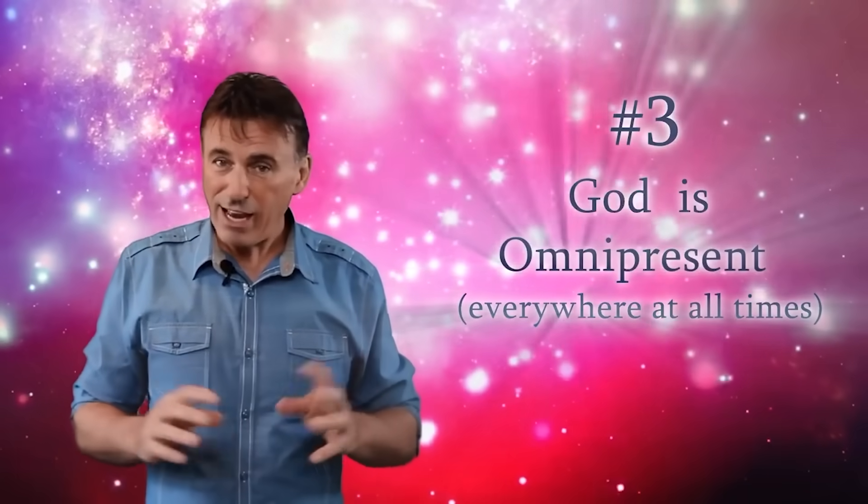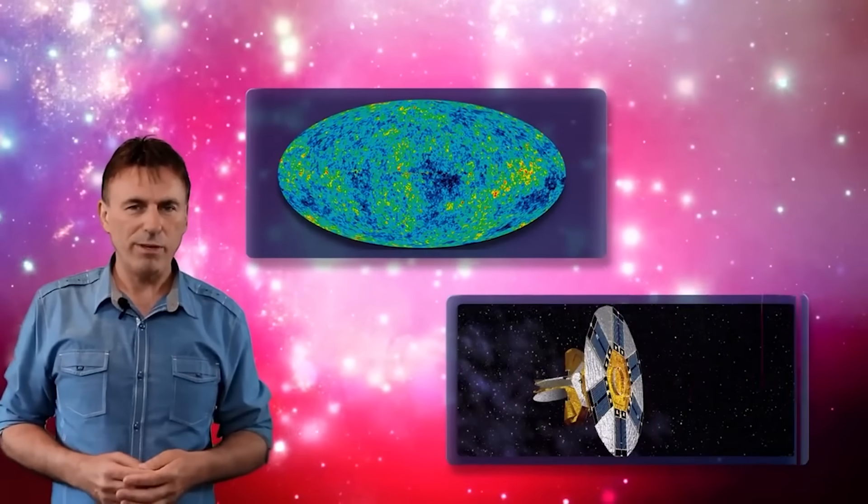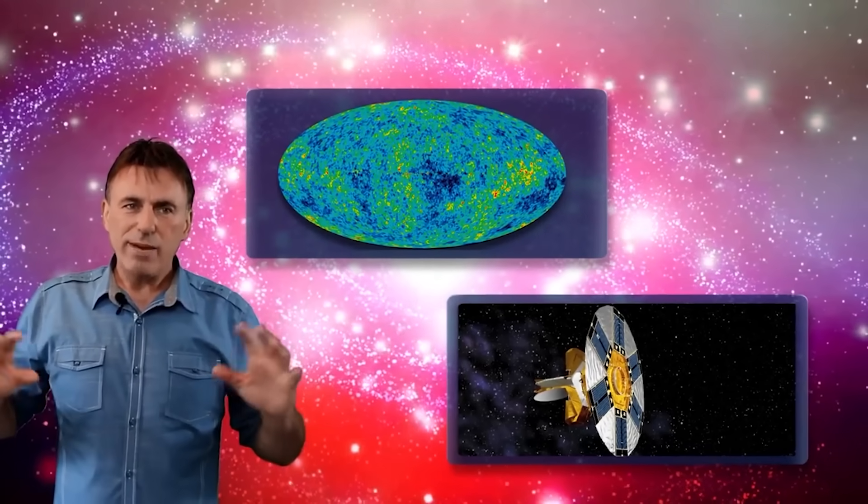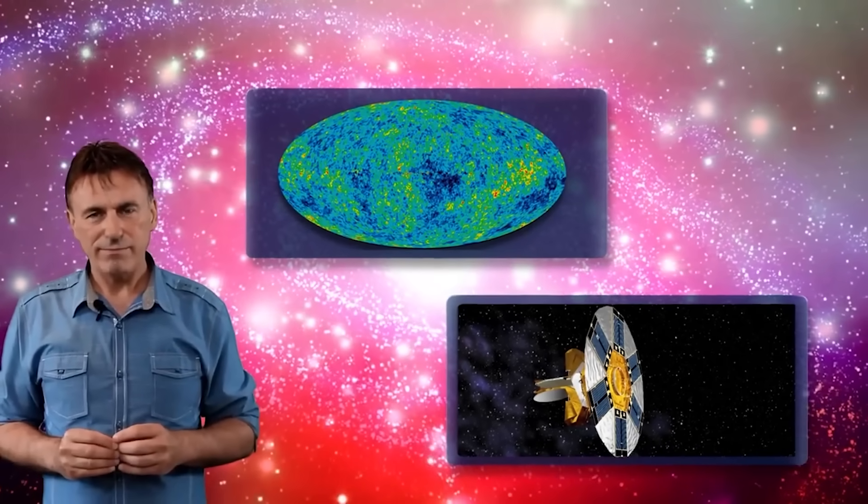Claim 3. God is omnipresent everywhere at all times. Here's the WMAP. The Wilkinson Microwave Anisotropy Probe launched by NASA in 2001. It was launched out into space to measure the temperature differences in the cosmic microwave background. So now God is the cosmic microwave background? First God is light, now God is microwaves. Well, I do admit it would be pretty cool to be able to turn water into wine in my microwave oven. But look, all you're doing is finding something that apparently exists everywhere and you're calling it God because it happens to share one characteristic with your proposed God. Again, fallacy of the undistributed middle.